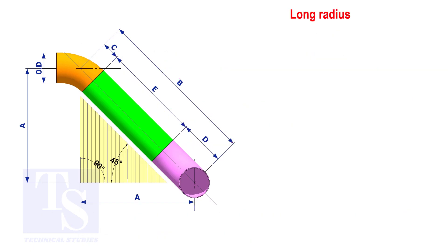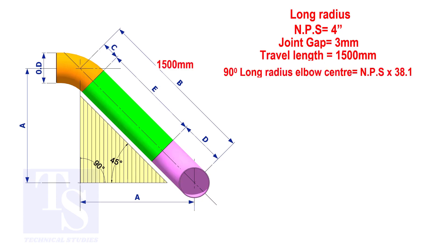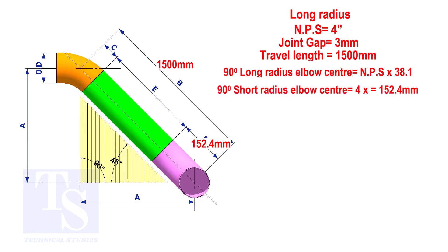Now assume that the elbows are long radius. Calculate the true length of the pipe. The elbow center is the nominal pipe size multiplied by 38.1. So the elbow center of the 90 degree elbow is 152.4 millimeters.